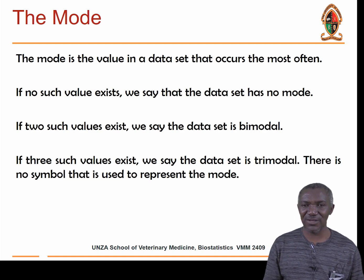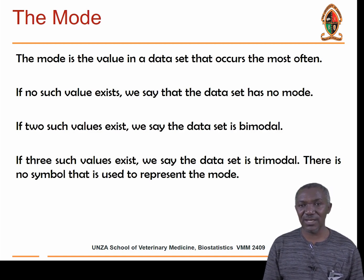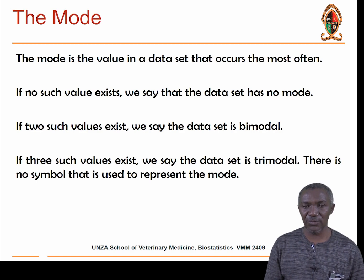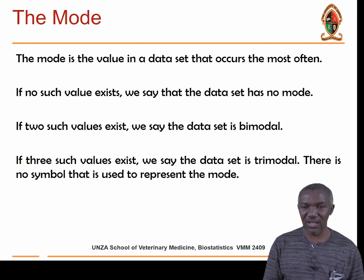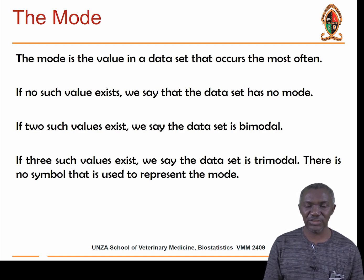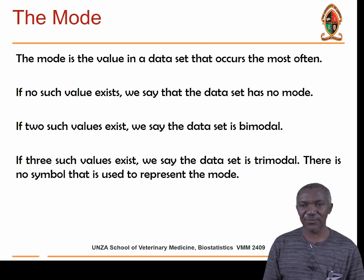If people have almost similar heights with no single value occurring more frequently, then there is no mode. Sometimes two numbers occur frequently — that is called bimodal. If three values occur most frequently, it is trimodal. A bimodal histogram will have two peaks; a trimodal distribution will have three peaks.